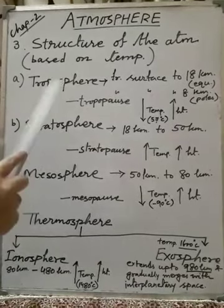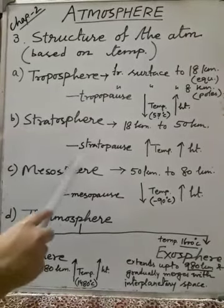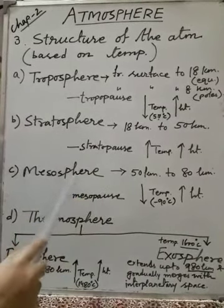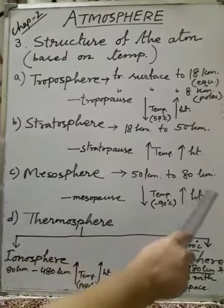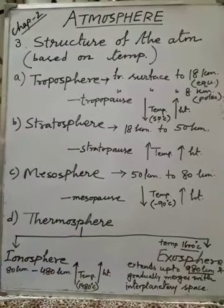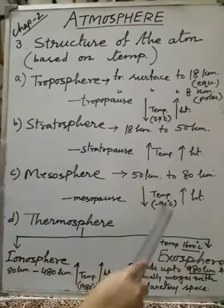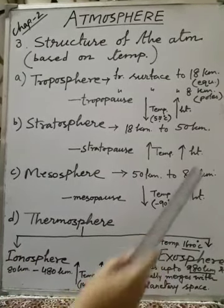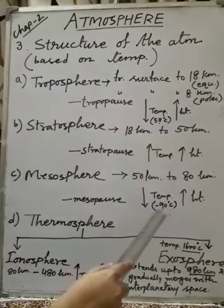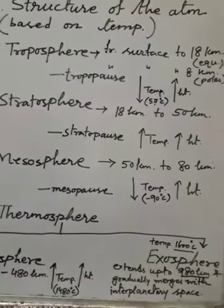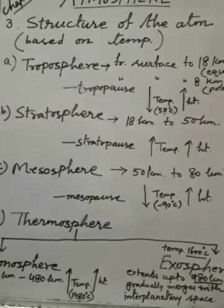After stratosphere, our next layer is mesosphere - in between, the upper limit stratopause is found. Mesosphere extends from 50 kilometers to 80 kilometers. This layer is called the coldest layer, because here temperature decreases with increasing height, and the lowest temperature figure is minus 90 degrees centigrade. Here, meteorites completely burn up in this layer.